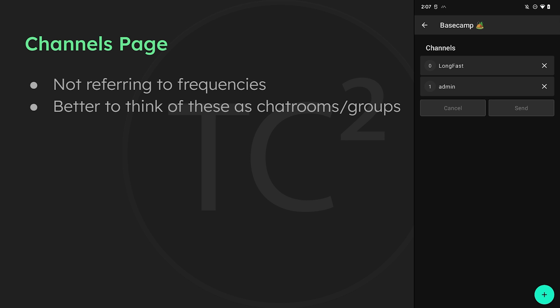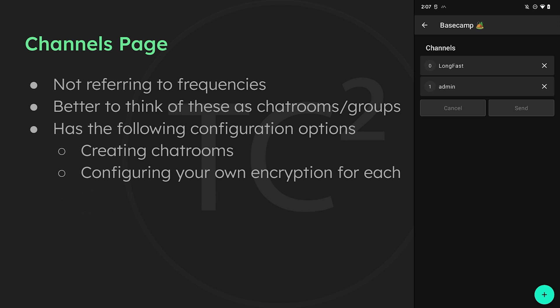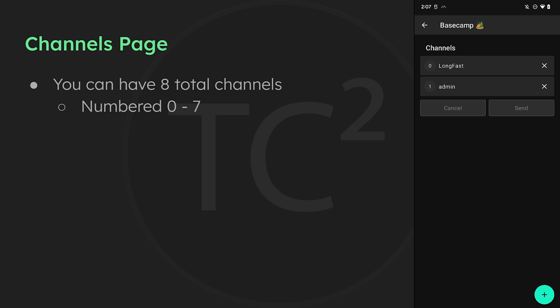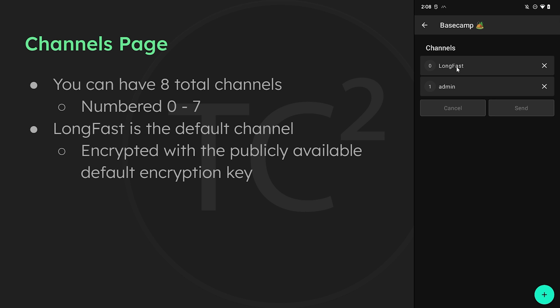Channels in this sense are best thought of as chat rooms — similar to IRC channels back in the day. This channel configuration page is for configuring these different chat rooms, the encryption for them, and the enabling or disabling of messaging using internet gateways. You can have a total of eight channels numbered zero through seven. The default long fast primary channel is what will be on the device in the default configuration. While it is encrypted, it uses a default encryption key, so other people on the default configuration will be able to join your mesh. Some people may want to stay on the default to see who else is out there, while others may want their own private encryption.